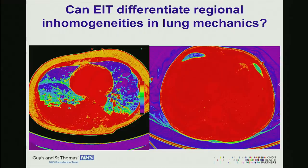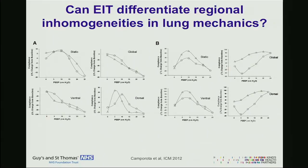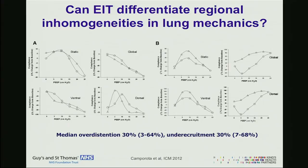We can look at compliance — static compliance in both patients looks similar. But if you look at the EIT, they look opposite. In one patient, as we increase PIP there will be overdistension; in the other, as we increase PIP there will be recruitment. We can differentiate at the bedside exactly what CT scan would show. In about 18 patients, we found that the median shows about one in three patients is either tidally overdistended or under-recruited, and the range is quite substantial.